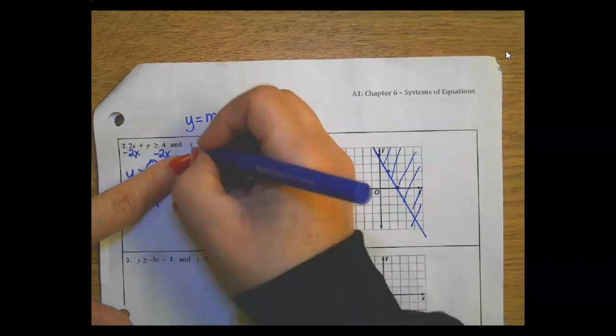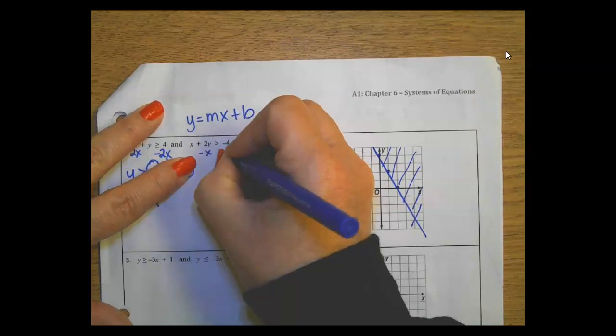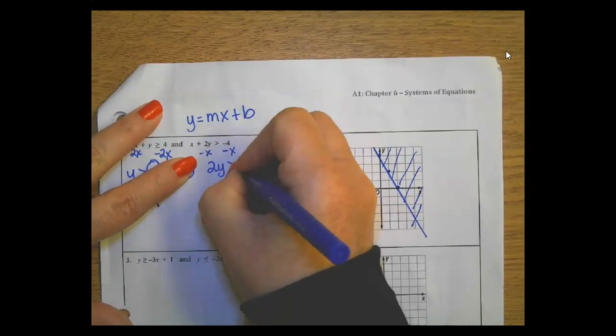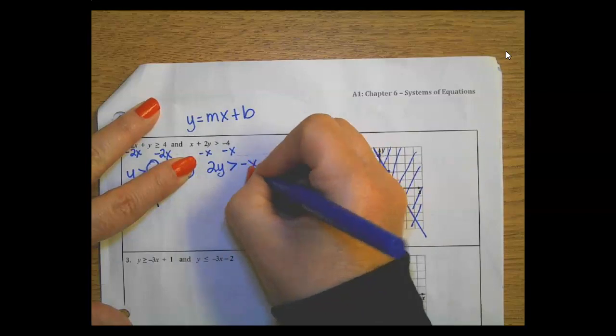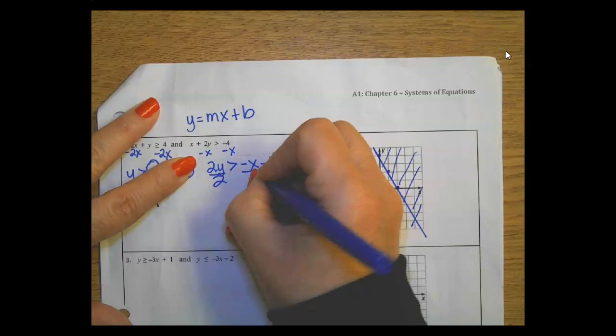On this next one, I'm going to subtract x from both sides. So I end up with 2y is greater than negative x minus 4.